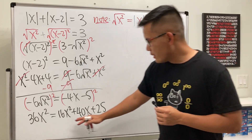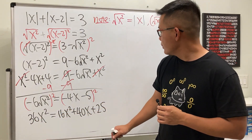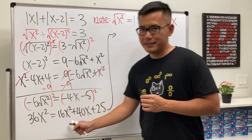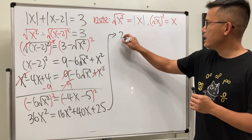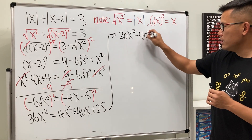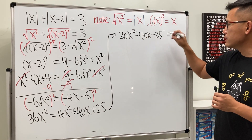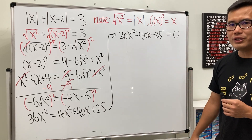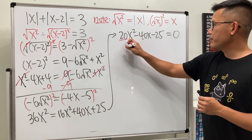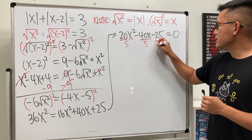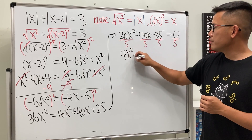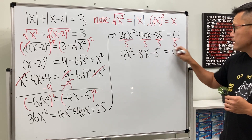Moving everything to one side: 36x² − 16x² = 20x², minus 40x, minus 25 equals 0. We now have a quadratic equation with two answers. Dividing everything by 5: 4x² − 8x − 5 = 0.